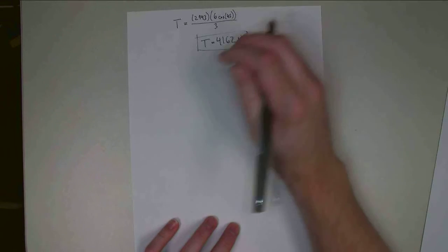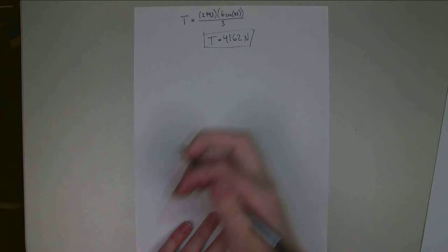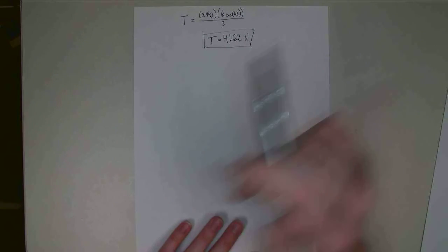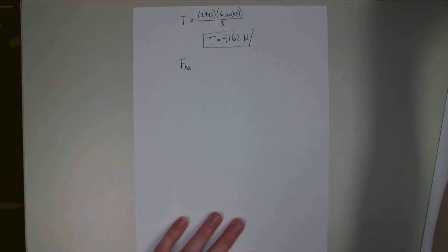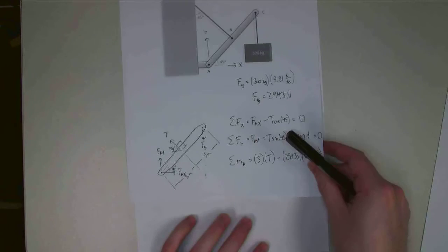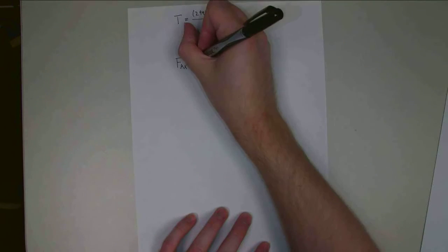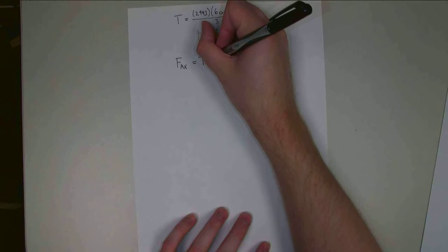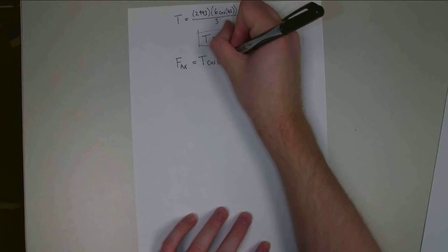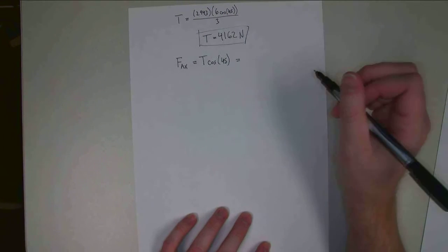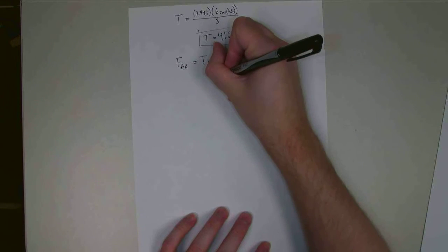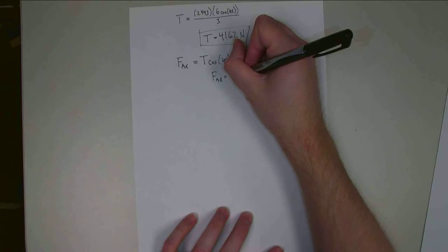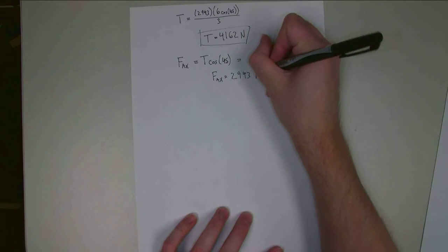That's one of my three unknown forces. Now I need to find FAX and FAY. I can do that by plugging in this value for T to the sum of forces in the X and Y equations. FAX, rearranging this top equation, is going to be equal to T times the cosine of 45, which if I plug in this number, it's going to give me FAX is equal to 2,943 Newtons.